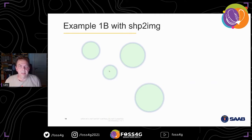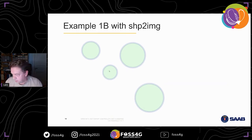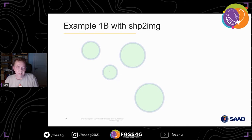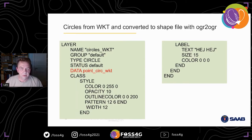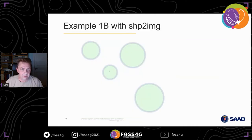All these examples are done with shapetoimg. As you see in the map file, I'm doing both — it's this kind of circles, they're kind of a polygon — and I do the outline on them.